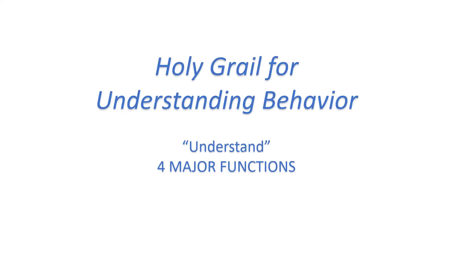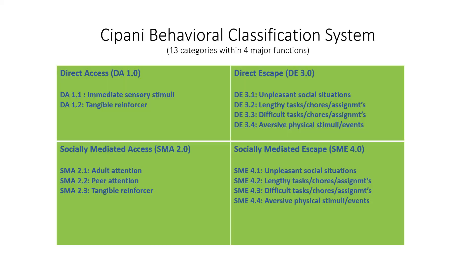It is pervasive for people in behavior analysis to talk about common functions of behavior. I think this is a big mistake and a conceptual mistake. There are four major functions — that's what should be highlighted in any task list. The holy grail for understanding behavior is to identify which of the four major functions is present in a given circumstance for a particular individual. Here are the 13 categories within the four major functions.